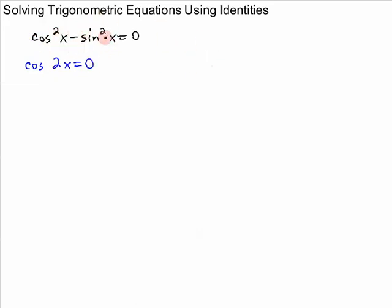you could replace sine squared with 1 minus cosine squared. Using a Pythagorean identity, distribute your negative, and you'll get 2 cosine squared of x minus 1 equals 0. So cosine squared of x would have to be positive 1 half, and then you could solve each of these equations accordingly.